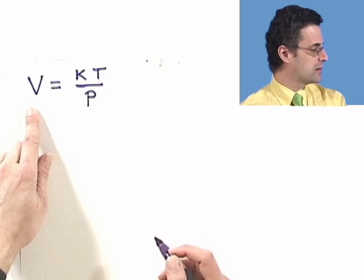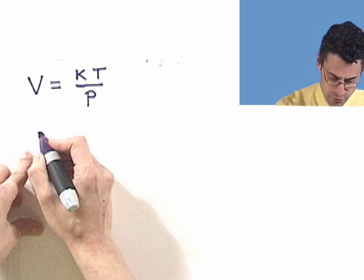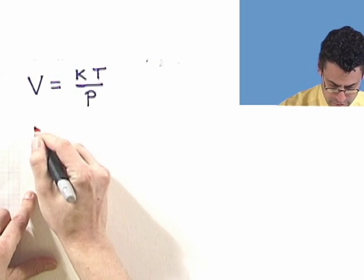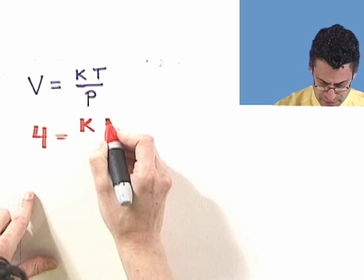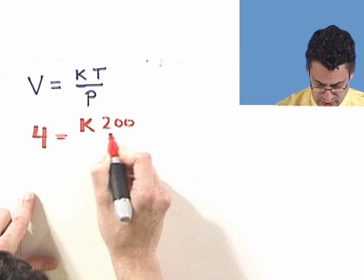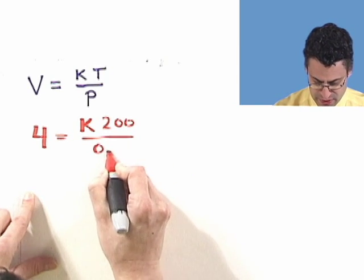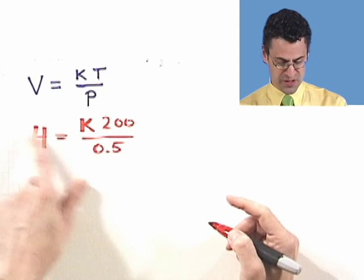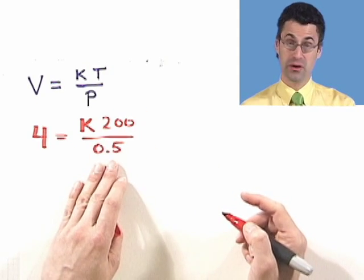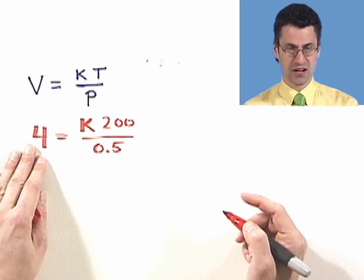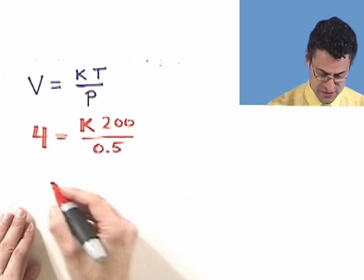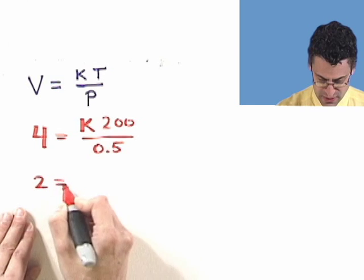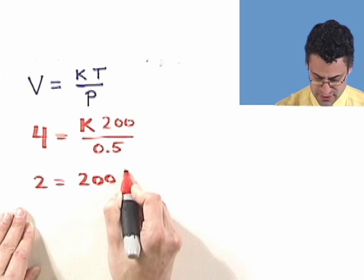We're told that we have a volume of 4. The constant we don't know, but the temperature is 200 and the pressure is 0.5. If we do a little cross product here, multiply both sides by 0.5, then I'm taking 4 times 0.5 or half of 4, which is 2.